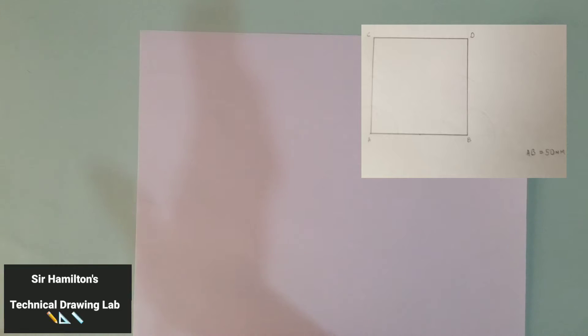Quadrilaterals are four-sided two-dimensional shapes that are joined together by four straight lines. For one of the simplest forms of quadrilaterals, we'll be looking at the square. So today we will be drawing the square.